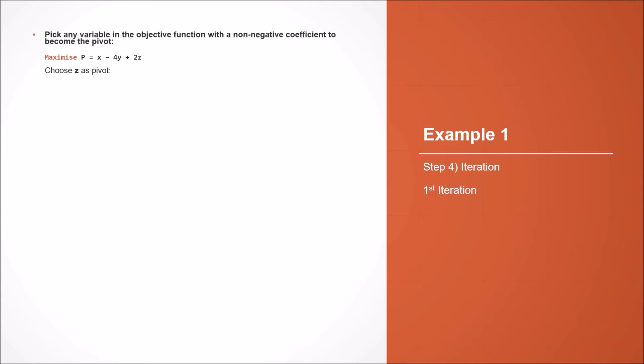Now we can perform iteration on our algorithm. We choose a variable with a non-negative coefficient in our objective function — this can be either x or z. For the sake of this example, we're going to choose z. We want to increase z as much as possible without exceeding our bounds: we can increase z up to 8 in equation a, and up to 2 in equation b. Since 2 is smaller than 8, this is our tightest bound, as it limits the growth of z the most.